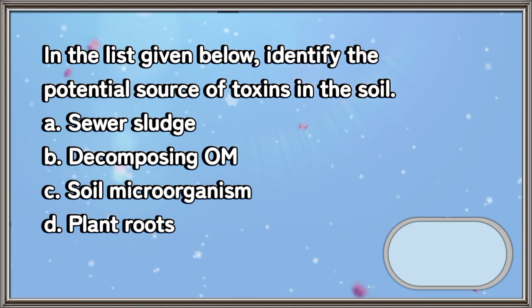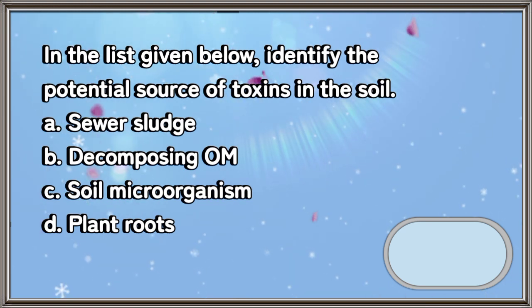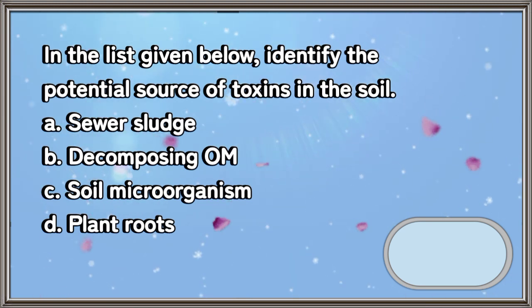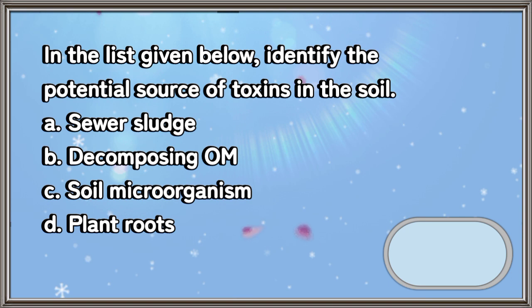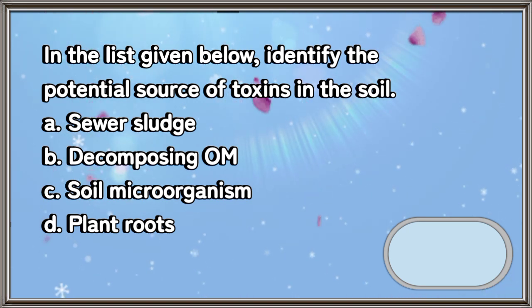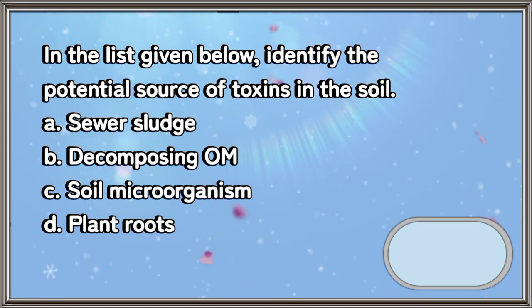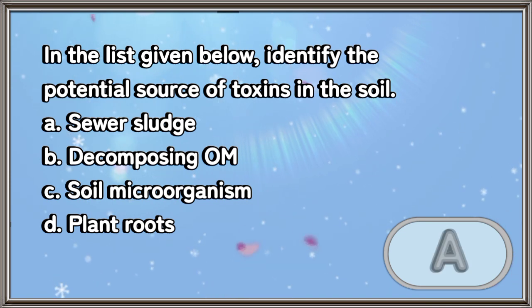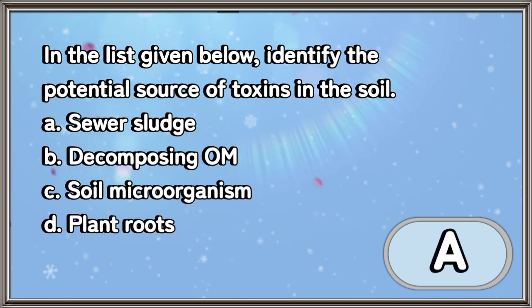In the list given below, identify the potential source of toxins in the soil: A. Sewer sludge, B. Decomposing OM, C. Soil microorganism, D. Plant roots. The answer is letter A.